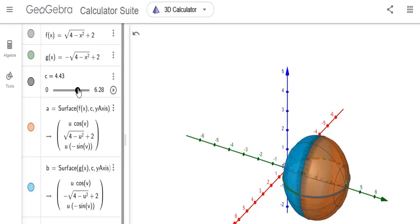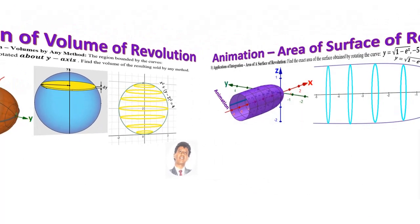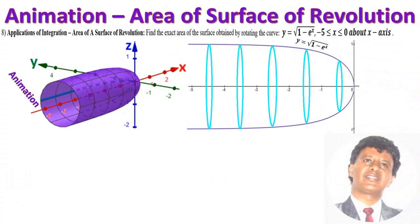That was the third animation. The next animation is the area of a surface of revolution. Find the exact area of the surface obtained by rotating y equals the square root of 1 minus e to the x, where x is between minus 5 and 0, rotated around the x-axis.